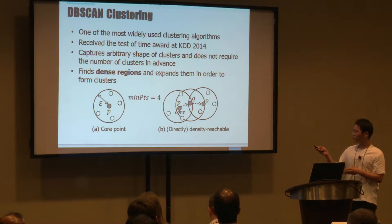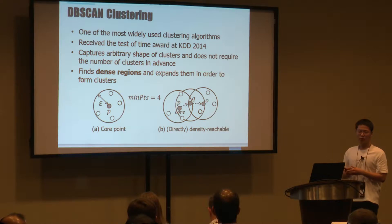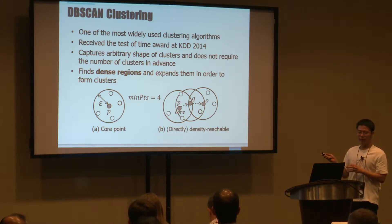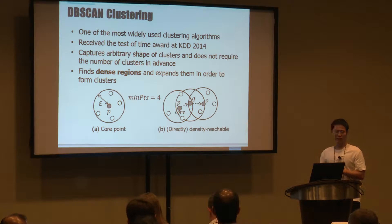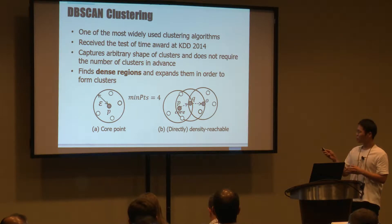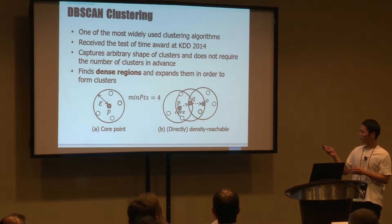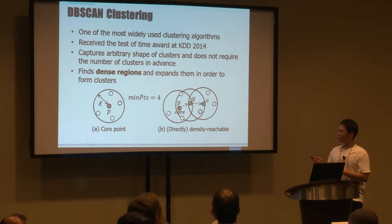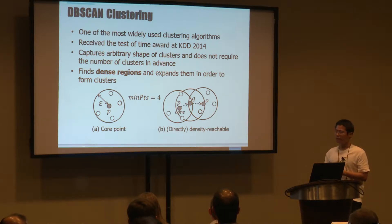If the point P is a core point and the point Q is an epsilon-neighboring point of P, then Q is directly density-reachable from P. And if this relationship is repeated multiple times, like points P and O, we call this relationship density-reachable, and all such points belong to the same cluster.